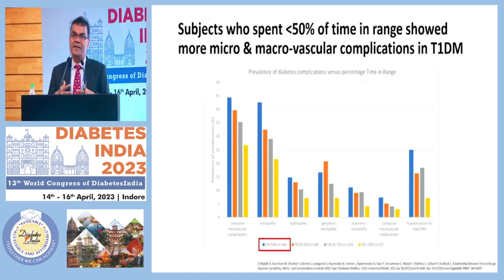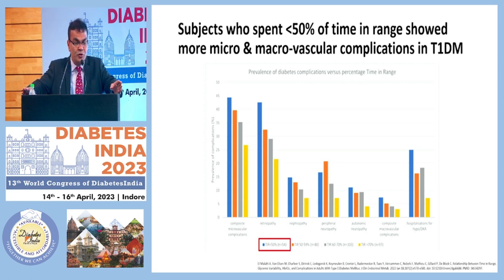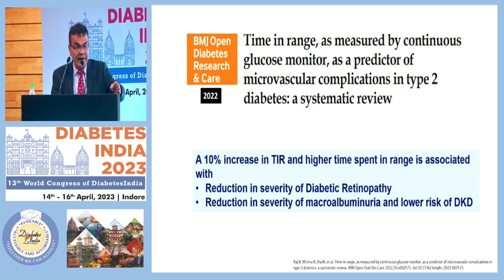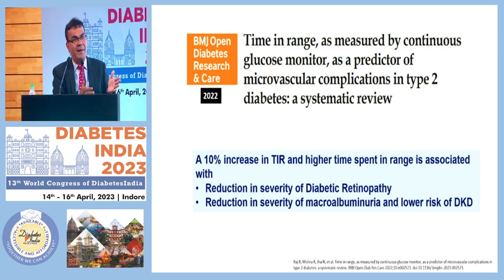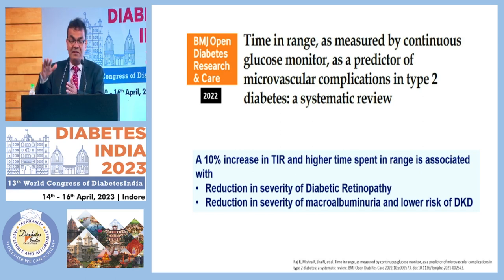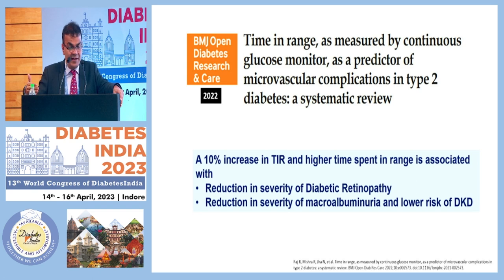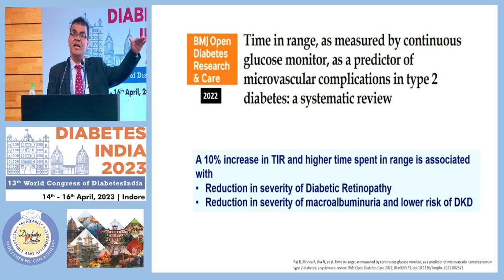Regarding clinical implications: subjects who spend less than 50% of time in range showed more micro- and macrovascular complications in type 1 diabetes. An interesting paper published in BMJ Diabetes Research and Care showed that time in range, as measured by continuous glucose monitor, is a predictor of microvascular complications in type 2 diabetes. Even a 10% increase in time in range — meaning better control and less glycemic variability — is associated with reduction in severity of diabetic retinopathy, reduction in microalbuminuria, and lower risk of diabetic kidney disease. Achieving a good HbA1c is one part, but reducing glycemic variability further reduces microvascular complications.